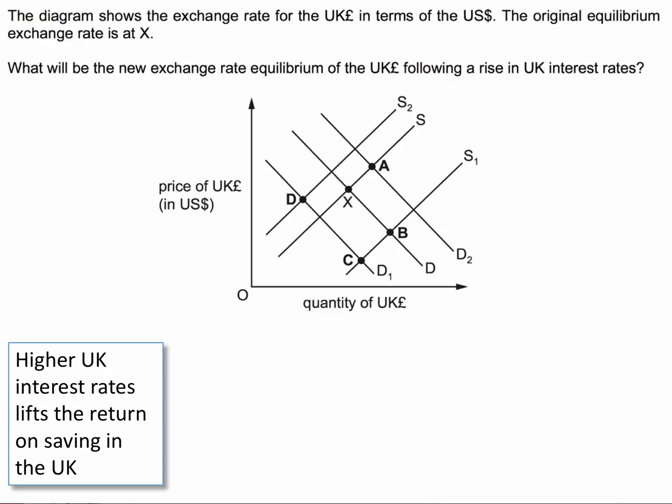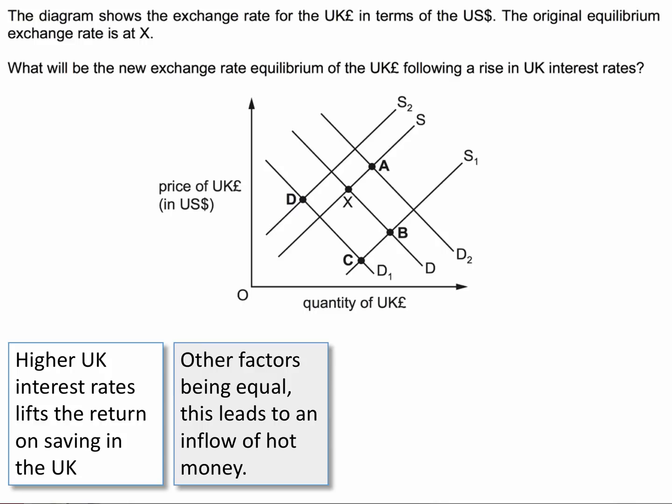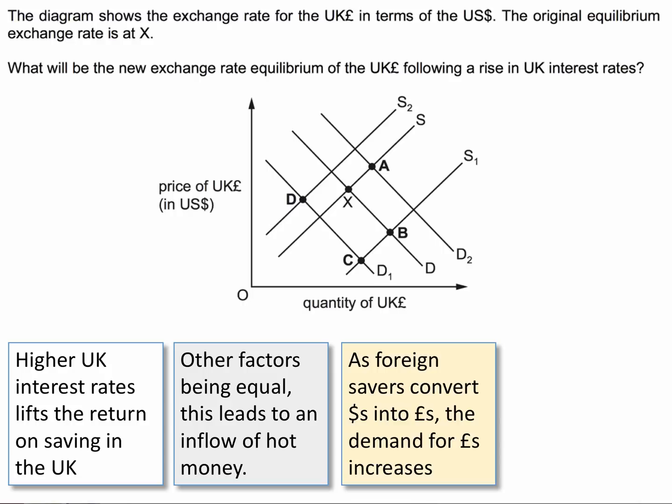Higher UK interest rates increase the return on saving in the UK. Other factors being equal, this leads to an inflow of hot money — short-term banking flows — into the currency exchanges. As foreign savers convert or sell their dollars into pounds to take advantage of higher interest rates, the demand for pounds in the market increases. In other words, D shifts out to D2.